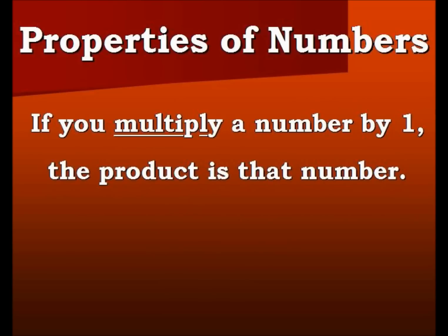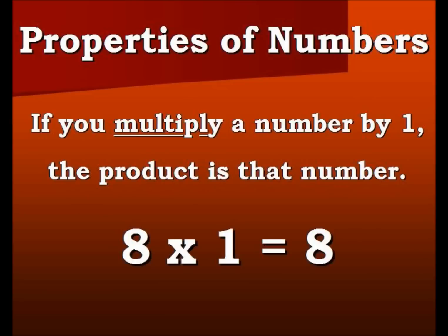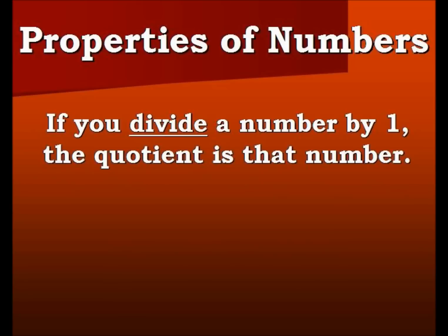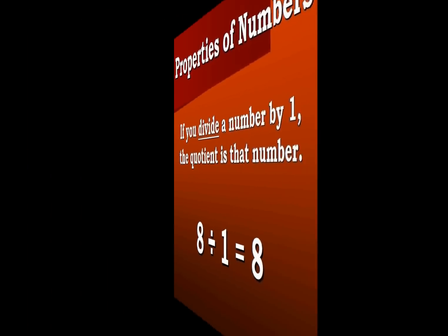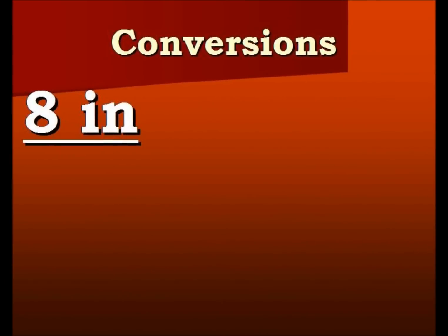The first point: any number multiplied or divided by 1 will not change that number. If you multiply a number by 1, the product is that number — 8 times 1 is 8. If you divide a number by 1, the quotient is that number — 8 divided by 1 is 8. So as we set the problem up, we have the 8 inches times 1.